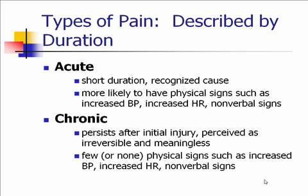With chronic pain, there's usually less of an acute physiologic reaction — you don't typically see increased heart rate or blood pressure. You may see more chronic nonverbal signs like frequent grimacing. Patients with chronic pain also get beaten down psychologically; they're more likely to see it as irreversible or meaningless pain, and may even see it as punishment. People have a hard time dealing with chronic pain.